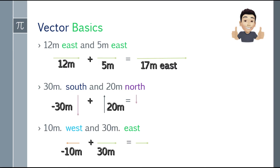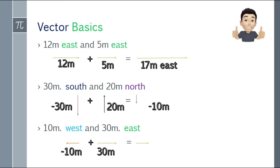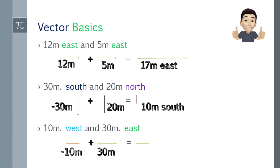So for the second one: 30 meters south and 20 meters north. When going south or west, you need to negate the number. So that will be negative 30. North and east are positive. So just add the numbers: negative 30 plus 20 equals negative 10. When the answer is negative 10, you transform it to south.